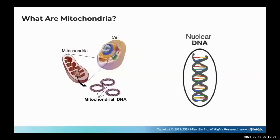Mitochondria are tiny organelles inside each of our cells that do all the energy generation. You typically have about 100 mitochondria per cell. They combust glucose and oxygen to make ATP, which is what the cell uses to do everything. They have their own mitochondrial DNA, which are rings. Nuclear DNA is three billion base pairs; mitochondrial DNA is only 16,000 base pairs — a good example of just how small they are.